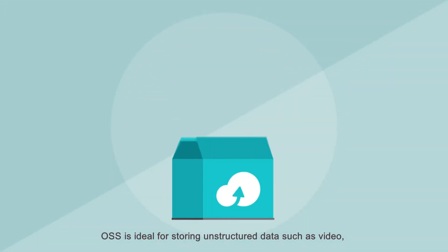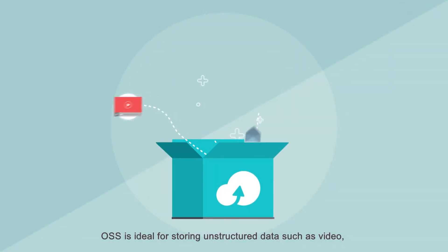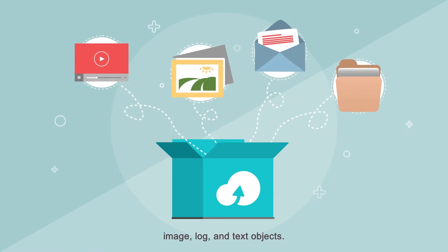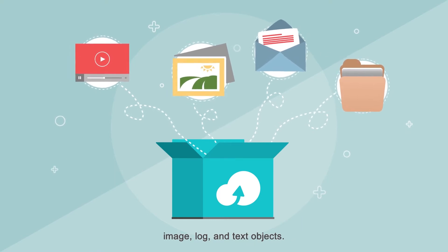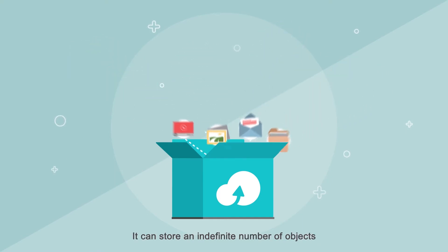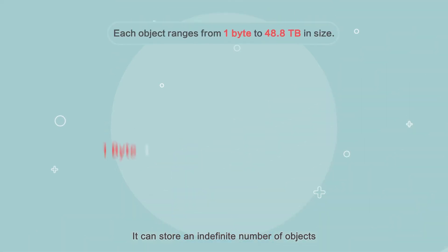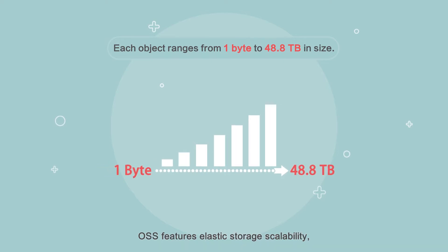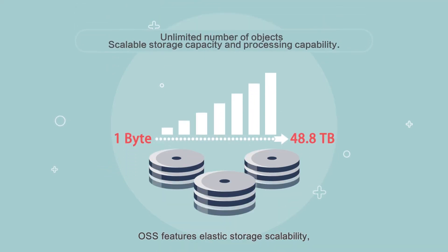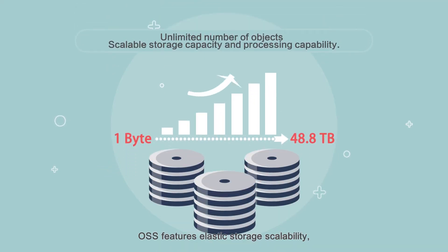OSS is ideal for storing unstructured data such as video, image, log, and text objects. It can store an indefinite number of objects, from as small as one byte to as large as 48.8 terabytes. OSS features elastic storage scalability, enabling internet applications to store large amounts of data.